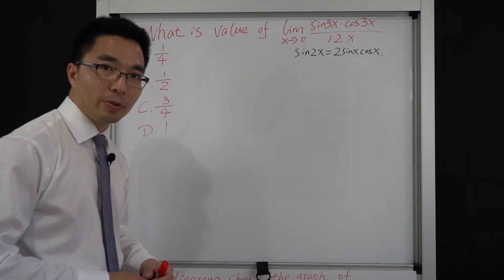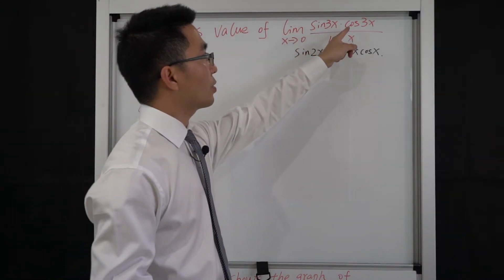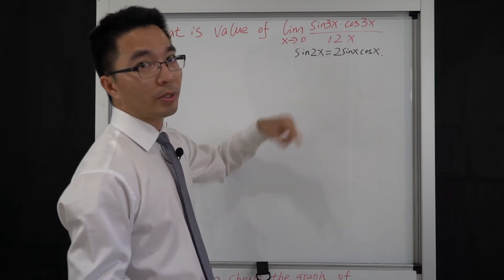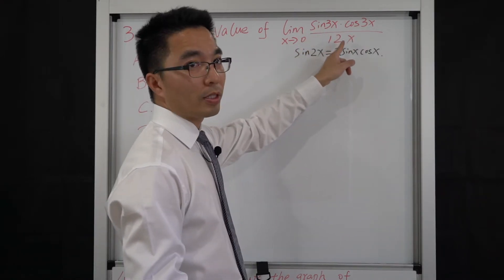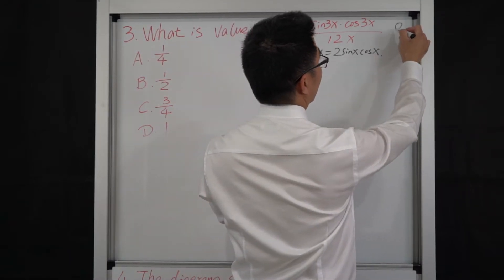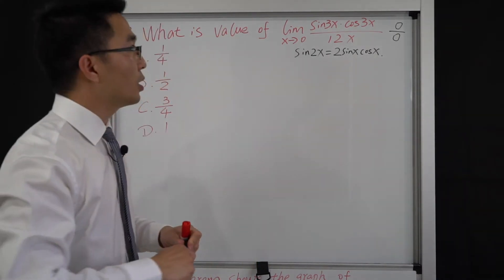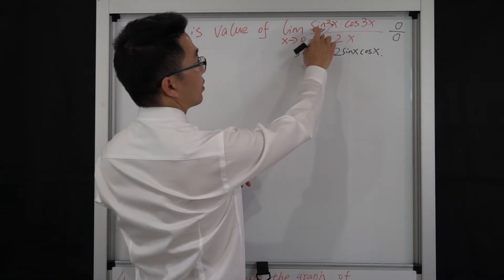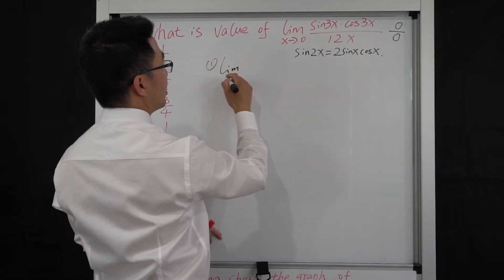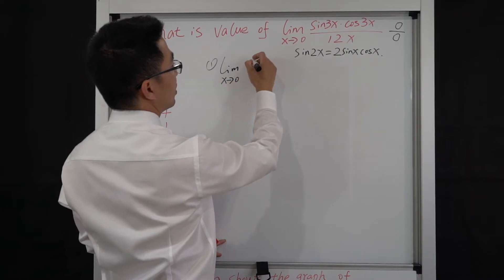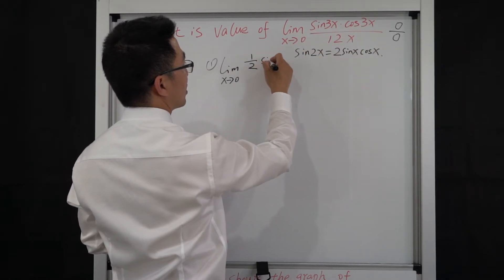Okay, let's go to question 3. The question asks for the value of the limit of sin(3x)·cos(3x) / (12x) as x approaches 0. When x approaches 0, the numerator is 0 and the denominator 12x is also 0, so we have a 0/0 form. I will introduce two methods to do this question. The first method: we can convert sin(3x)·cos(3x) using the double angle identity into (1/2)sin(6x).